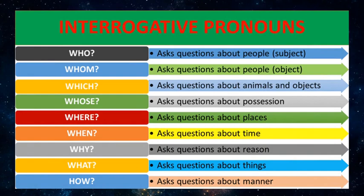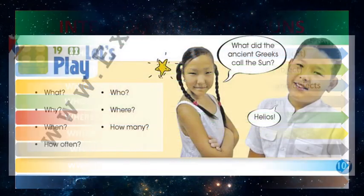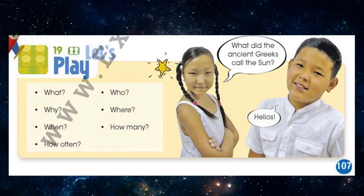Before we do Exercise 19, we should review interrogative pronouns. Interrogative pronouns are pronouns used to ask questions. Here we have some examples. Exercise 19 — let's play. You should make questions using interrogative pronouns. For example: What did the ancient Greeks call the sun? Helios.